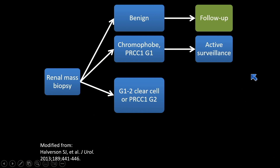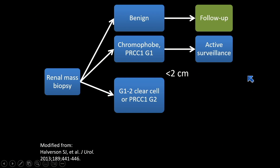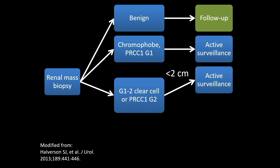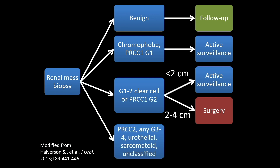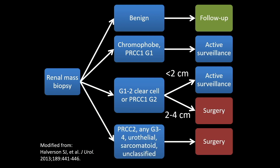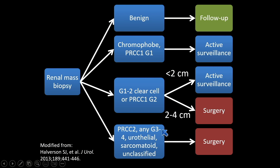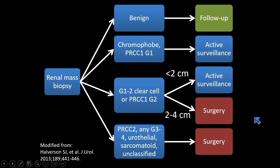For intermediate-risk tumors, like clear cell grade 1 to 2 or a higher-grade papillary tumor, the algorithm figures that depending on tumor size, very small tumors may be amenable to active surveillance, while larger tumors may be candidates for surgery. Very high-risk tumors are automatically candidates for surgery, such as grade 3 tumors, urothelial carcinomas, or sarcomatoid or unclassified renal cell carcinomas.